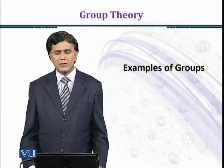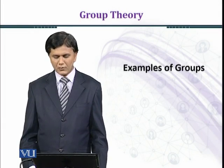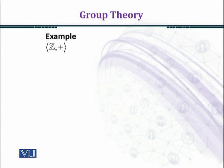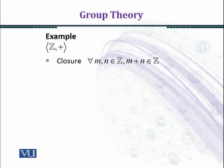Now we shall consider some examples of groups. Consider the algebraic structure Z under addition. We have to see whether the set of integers is a group under addition or not. First, we check the closure property. We choose arbitrary integers M and N in Z, so that M plus N belongs to Z. When we add two integers, the answer is always an integer.